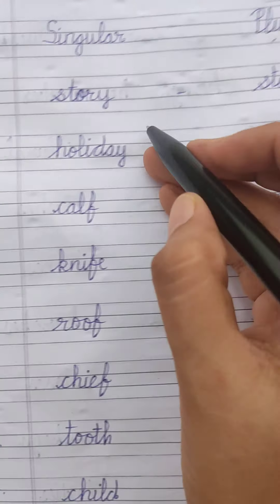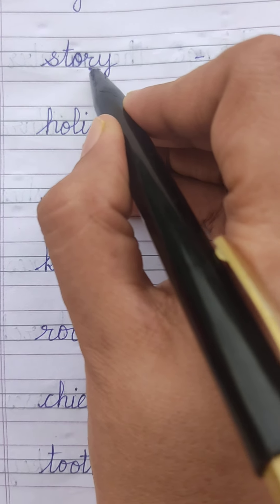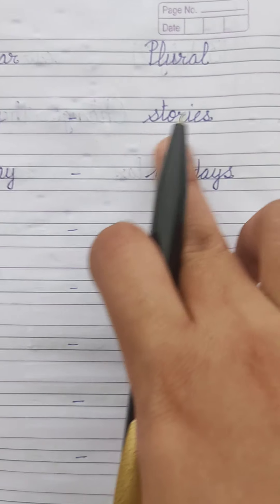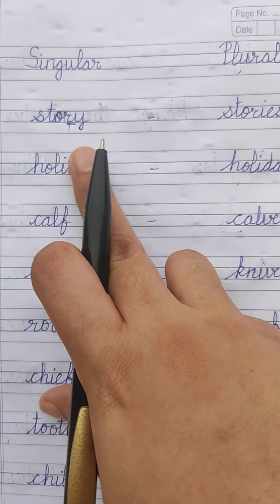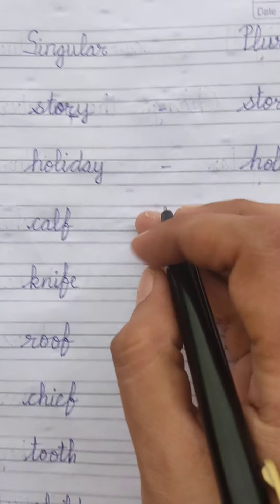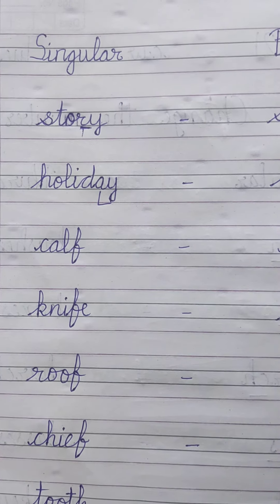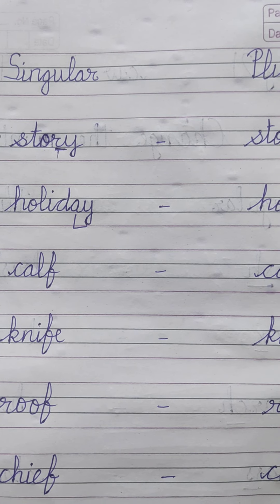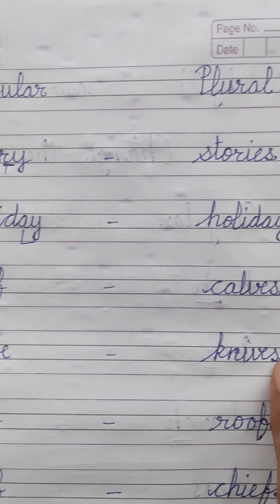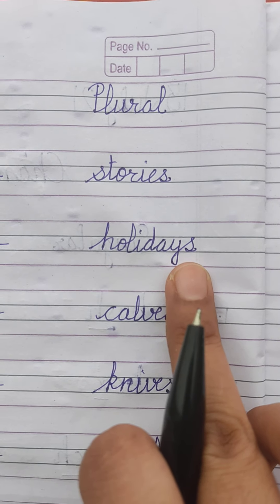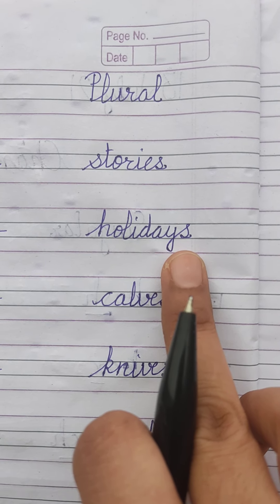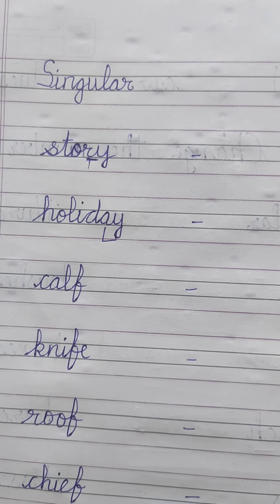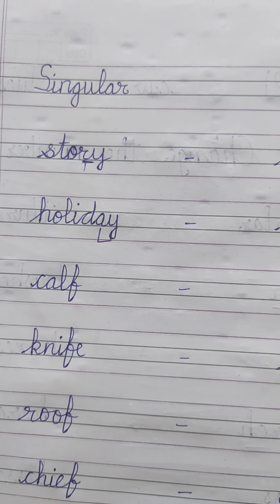'Story' — the letter before 'y' is 'r,' which is a consonant, so 'y' is changed to 'ies': story → stories. 'Holiday' — check what comes before 'y': it is 'a,' which is a vowel, so we simply add 's': holiday → holidays. These are the rules when converting singular to plural for words ending in 'y.'